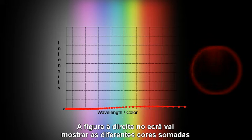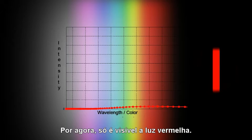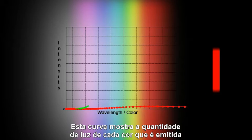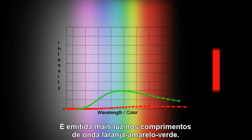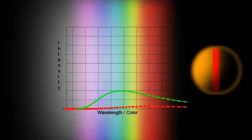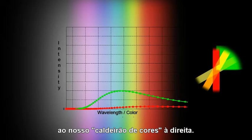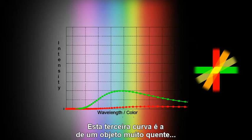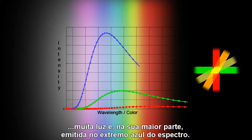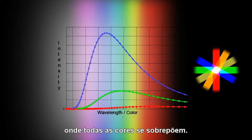The figure on the right will show the different colors added together as we progress. This curve shows how much light of each color is emitted by a medium temperature object, and the most light is emitted in the orange, yellow, and green wavelengths. So now we add orange, yellow, and green to our cauldron of light on the right. This third curve is for a really hot object — lots of light, with most of it being emitted toward the blue end of the spectrum. And as you can see, our cauldron is now pure white in the center where all the colors overlap.